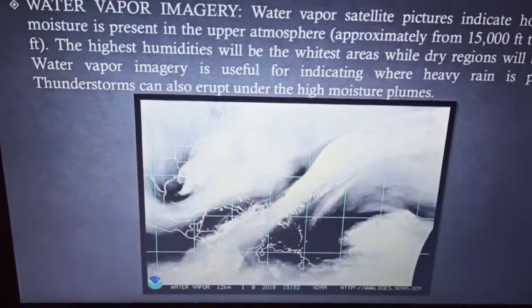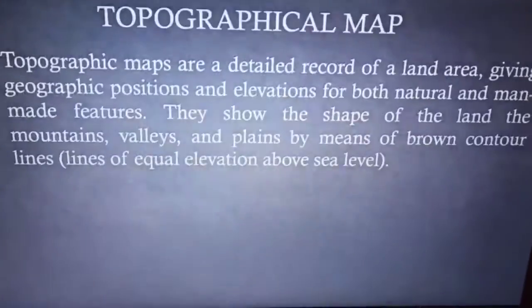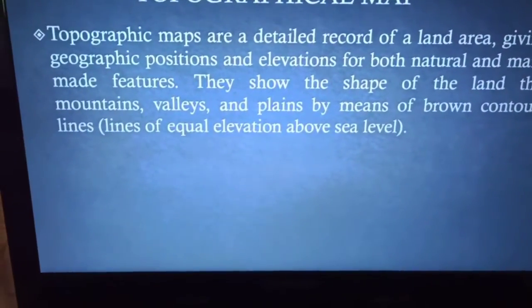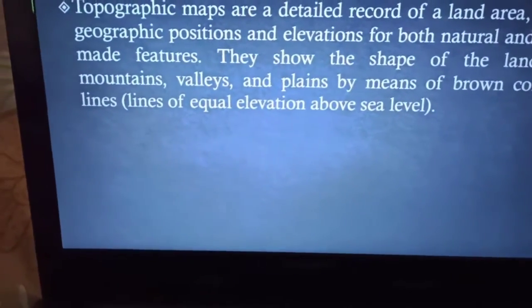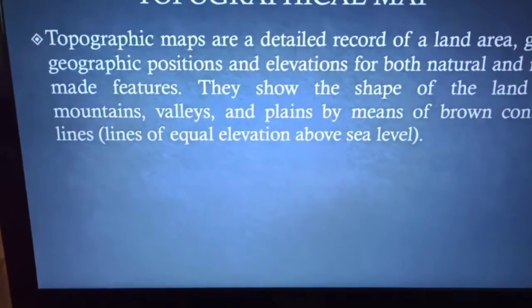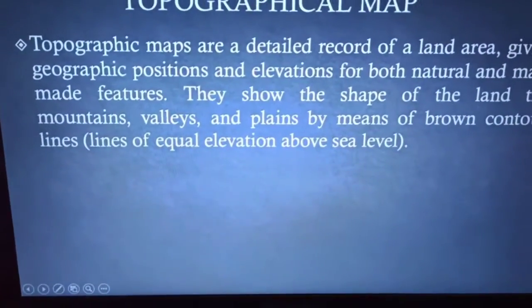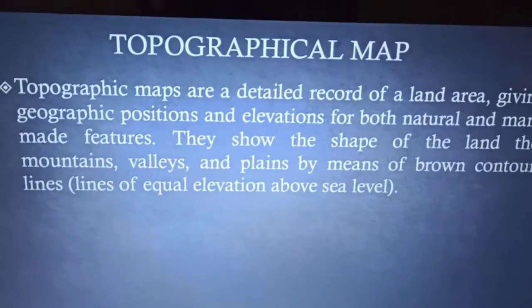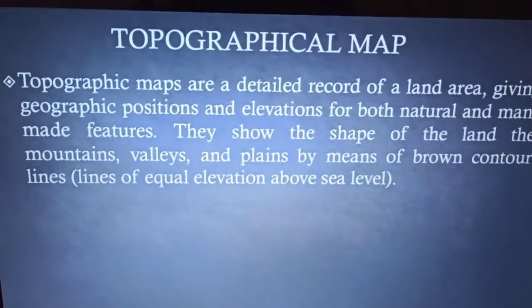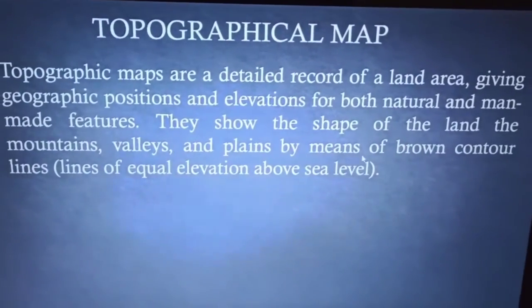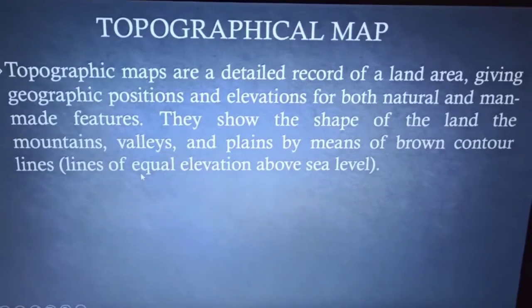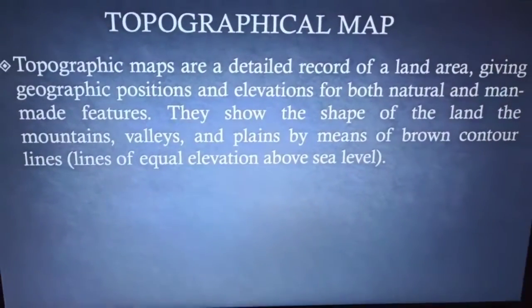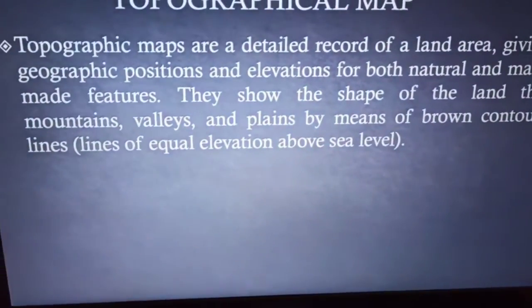This covers the different types of satellite imagery. Now we move to the topic of topographical maps. Topographical maps are a detailed record of a land area, giving the geographic position — meaning the latitudinal and longitudinal values — and the elevation for both natural and man-made features such as houses and parks. They show the shape of the land — mountains, valleys, plains — by means of brown contour lines, which are lines of equal elevation above sea level.